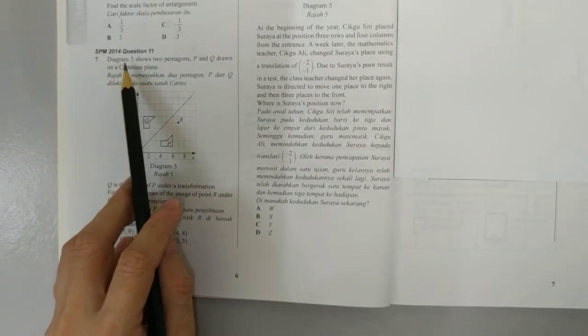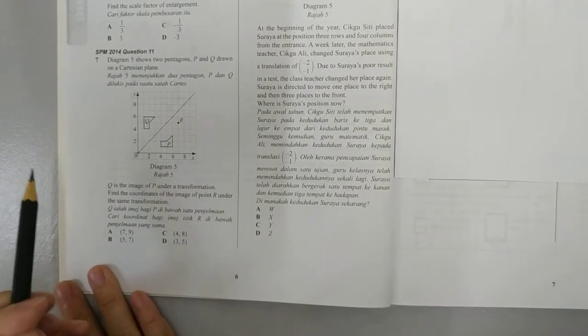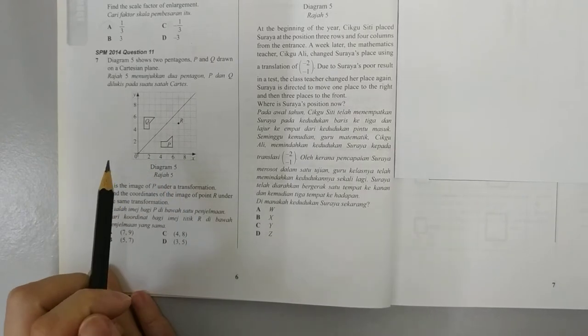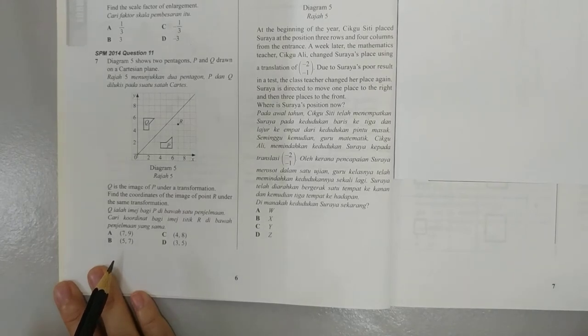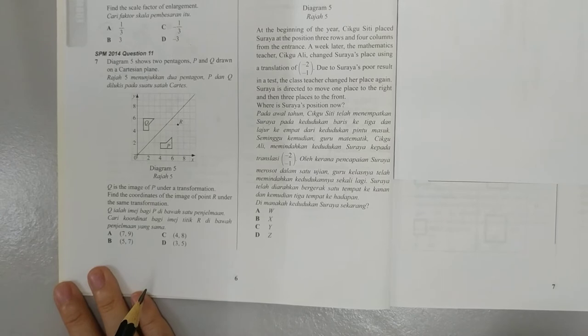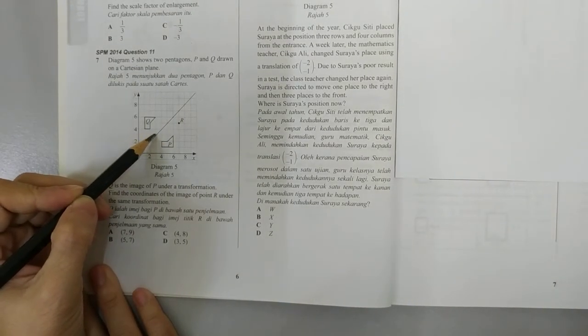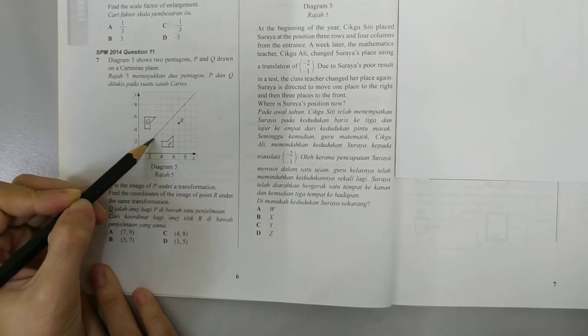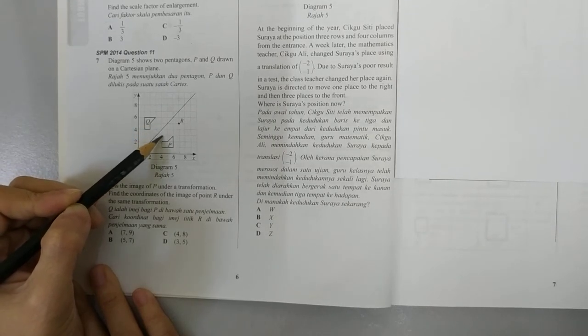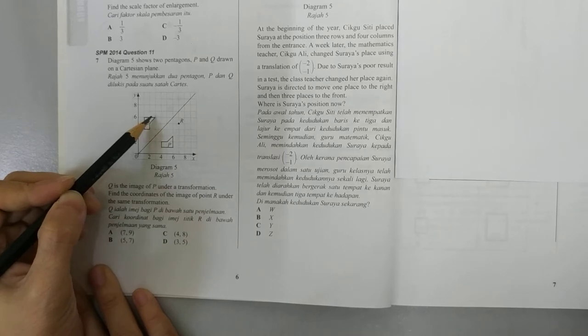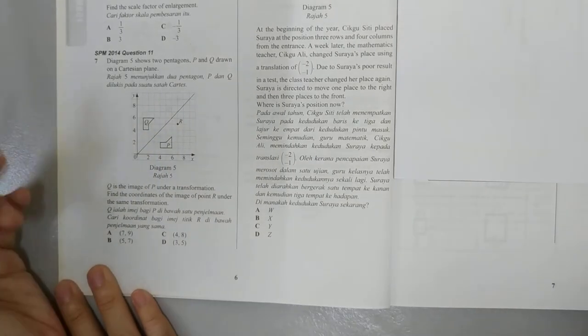So number 7, diagram 5 shows 2 pentagons, PQ, drawn on the Cartesian plane. Q is the image of P under a transformation. Find the coordinates of image point R under the same transformation. So this looks like a reflection. So let me confirm that. 1, 1, 1 and a half, 1 and a half, 1 and a half, 1, 2 and a half, 1 and a half, 2 and a half. And this is 1 and a half, 1 and a half and a 1. So it is a reflection.